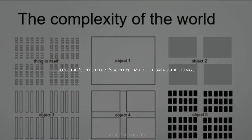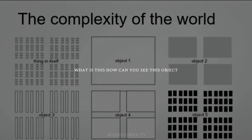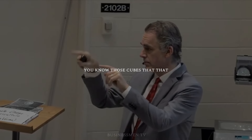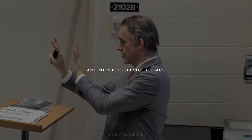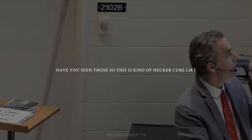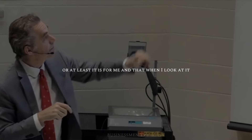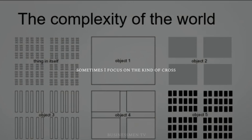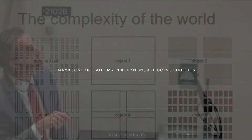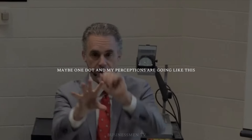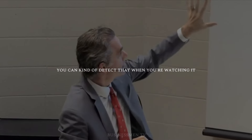So there's a thing made of smaller things, which are made out of smaller things. And it's kind of my iconic representation of the complexity of the world. How can you see this object? It's like a Necker cube — you know those cubes that are line drawings that you can see the front of, and then it'll flip to the back. This is kind of Necker cube-like, in that when I look at it, my perceptions play around with it. Sometimes I focus on the cross-like shape in the middle, and sometimes I can see these other lines, and sometimes I'll focus on that square, and sometimes I can see the little dots there. My perceptions are going like this, trying to fit a pattern to it, and you can kind of detect that when you're watching it.